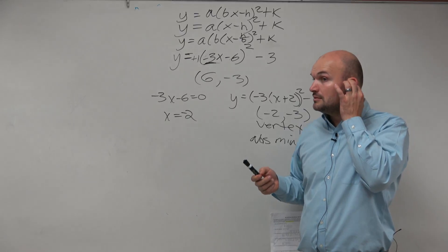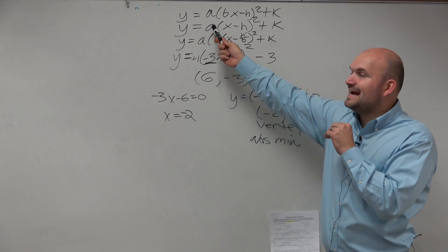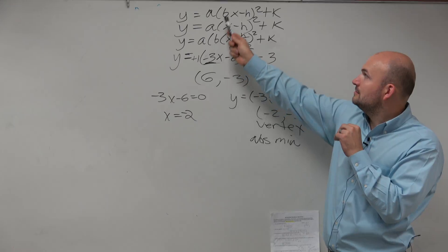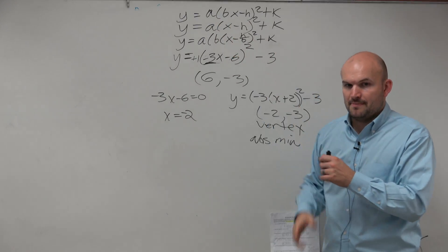So why is negative 3 not A? Because A is on the outside. B is on the inside. See the difference?